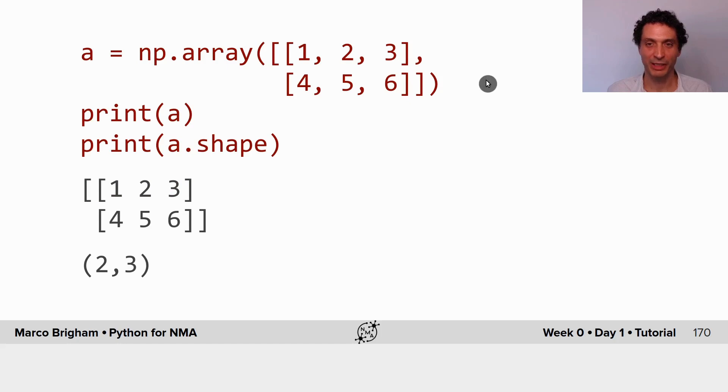This is how you would specify a two-dimensional array with a list of lists, one list for each element in a dimension, and the shape of this one will be 2 by 3.